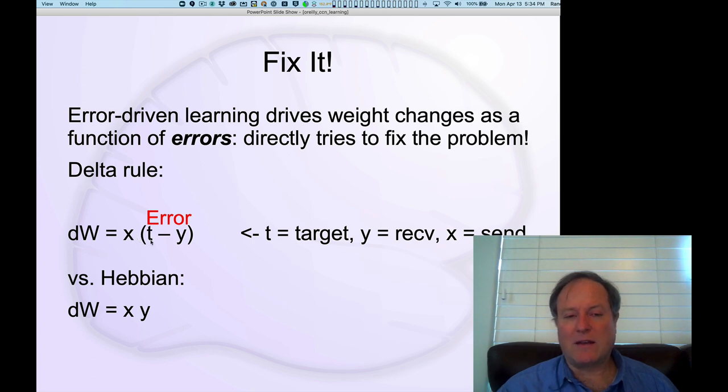In another case, if the target is 0 but the unit was active at 0.5, that difference is 0 minus 0.5, which is negative, so the weights should decrease. If you're active and you shouldn't have been, you decrease your weights. If you were not active and you should have been, you increase your weights. It's that simple. You're just trying to fix the errors and change the pattern of activity by increasing or decreasing the synaptic weights to match the target value.